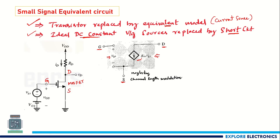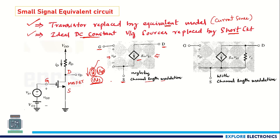Now, what happens if we consider channel length modulation? By considering channel length modulation, the drain current I_D becomes dependent on V_DS. Previously, I_D only depended on V_GS and not on V_DS. With channel length modulation, I_D depends on V_DS, giving a finite output resistance R₀, which is added to the transistor equivalent circuit in parallel with the current source.